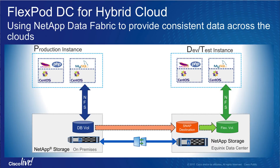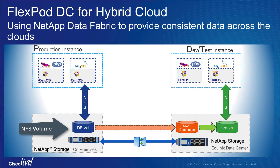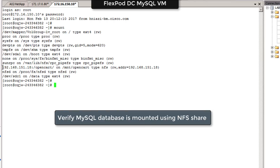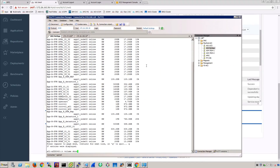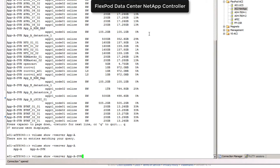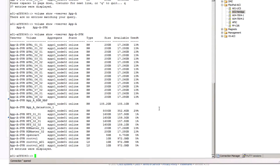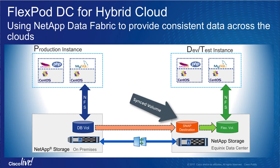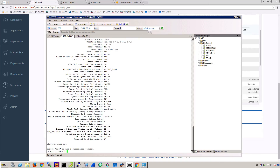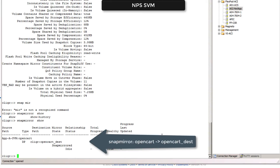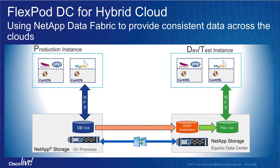We will now evaluate deploying the OpenCART application using NetApp Private Storage. NetApp Private Storage enables the enterprise to deploy both web and database servers in the cloud while maintaining control of critical user data. The customer data from the production instance is moved to an NFS volume in the FlexPod data center. This NFS volume is then synced with the NetApp Private Storage using SnapMirror. Any new application instance deployment in the cloud utilizes a FlexClone of the SnapMirror destination.